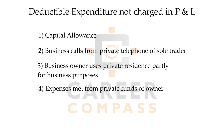The last adjustment is for allowable expenditure not charged in the P&L. Businesses usually charge all their expenses and rarely forget, but there are some examples of expenditure allowed under tax law that may not appear in the P&L — those would need to be deducted.